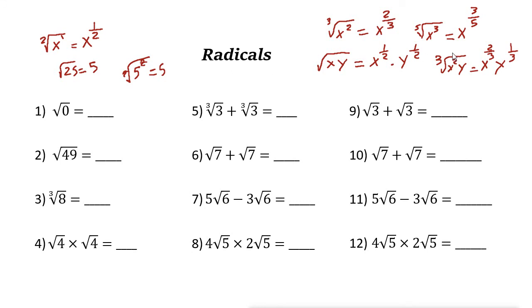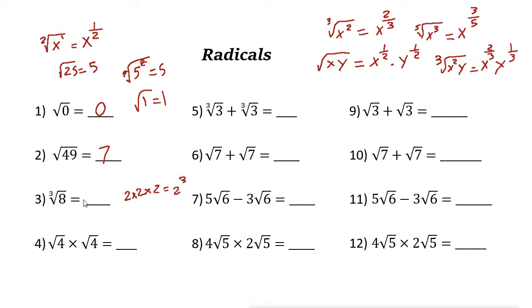So radicals are similar to exponents. There are some rules for adding, subtracting, and multiplying radicals. Root 0: we're looking for a number that when multiplied by itself gives 0, so it is 0. Root 1 is 1, since 1 times 1 is 1. Root 49 is 7. The cubic root of 8: since 8 can be written as 2 times 2 times 2, or 2 cubed, the cubic root of 2 cubed cancels out and the answer is 2.